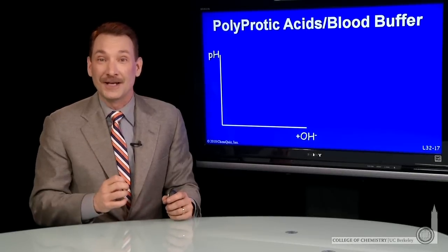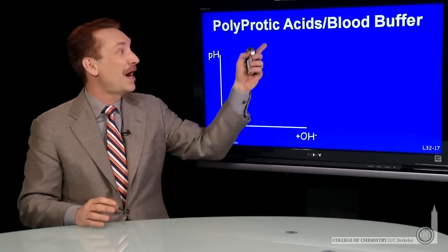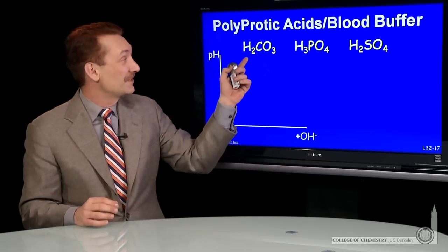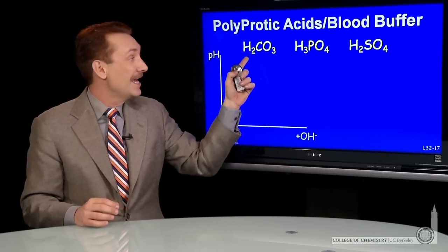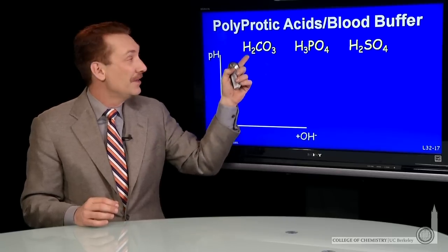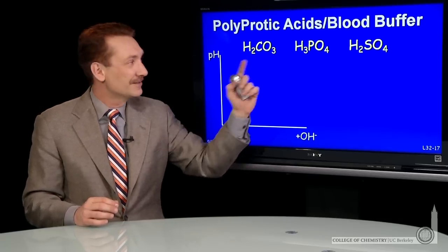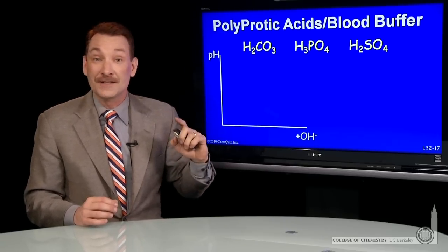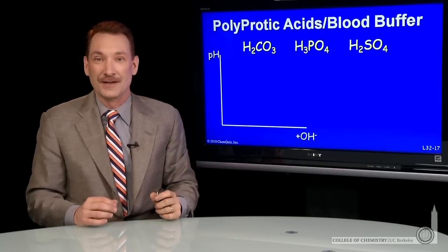Many compounds have several acidic protons, so-called polyprotic acids. Here's some examples. Carbonic acid, H2CO3, two acidic protons. Phosphoric acid, three acidic protons. Sulfuric acid, two acidic protons.